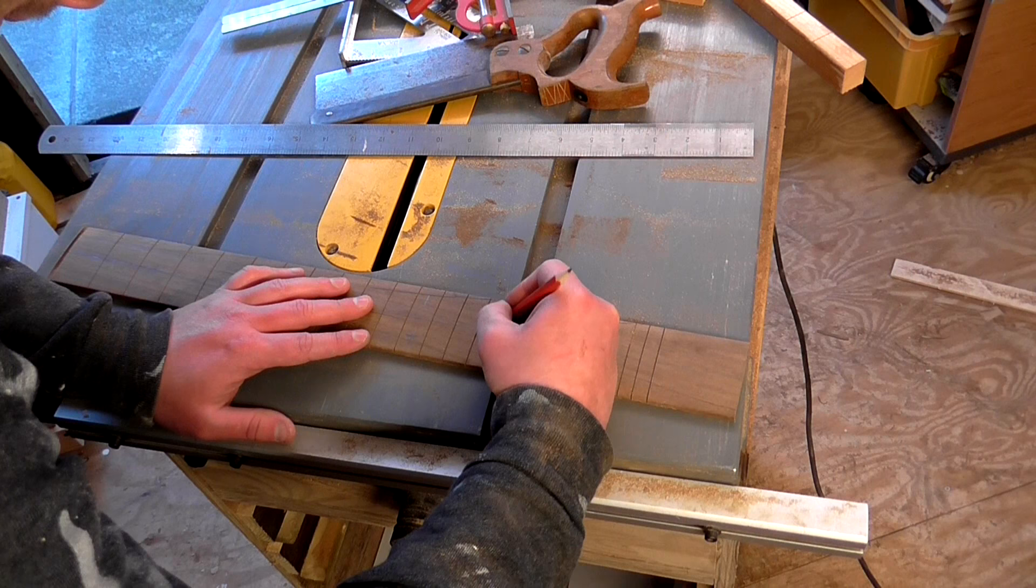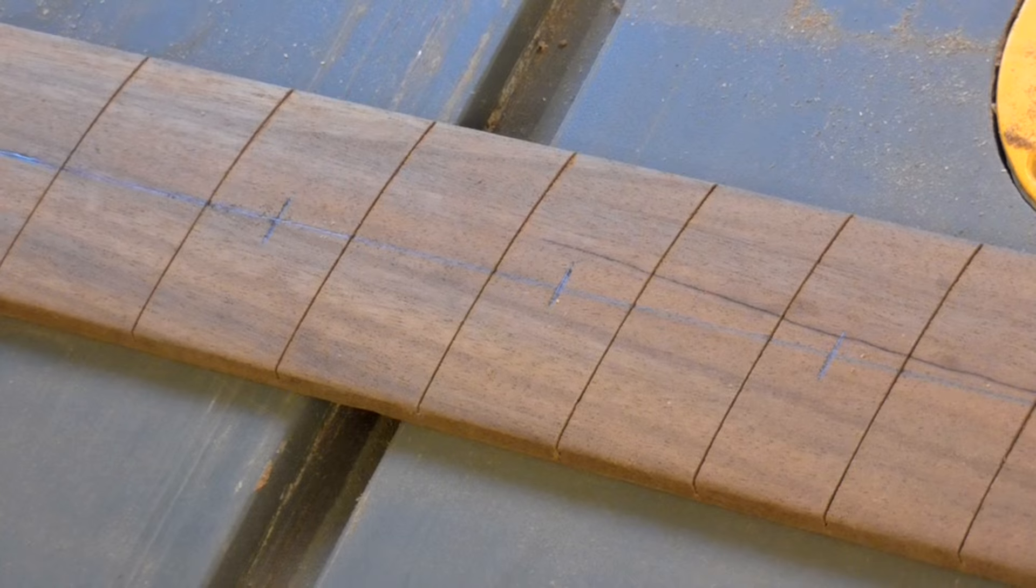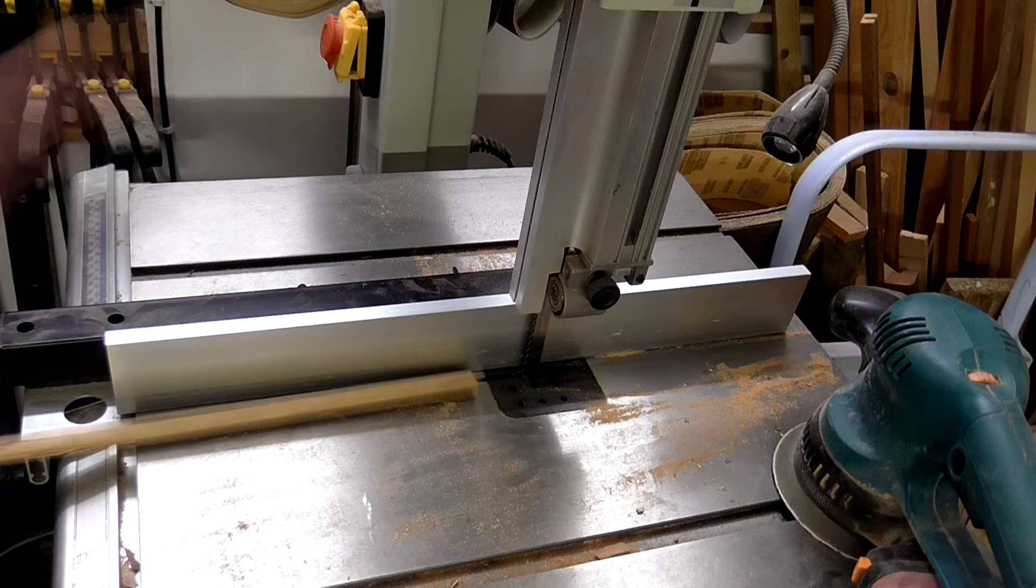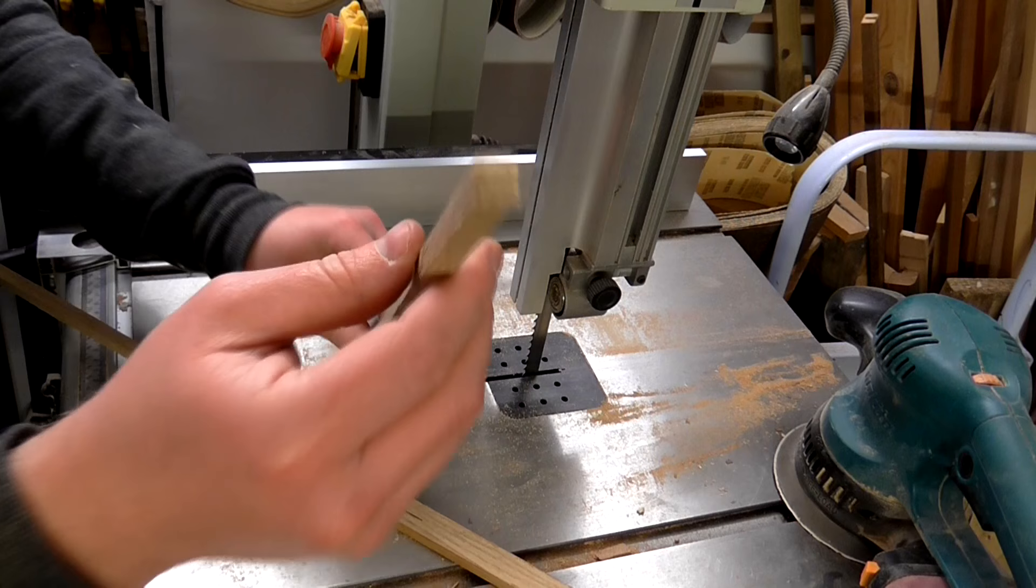To make the fret markers I wanted to make some round oak dowels. The light colour of the oak would contrast nicely with the dark colour of the Sapele fretboard. I first cut a strip of oak to about 10mm square.